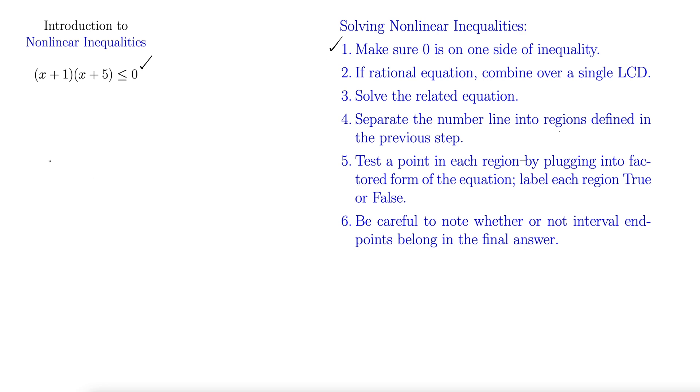Solve the related equation. So what that means is we solve the equation (x + 1)(x + 5) = 0. This is the related equation. We can do that pretty quickly: x = -1, x = -5. Done.